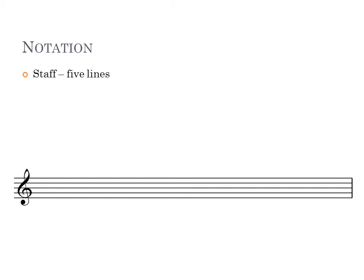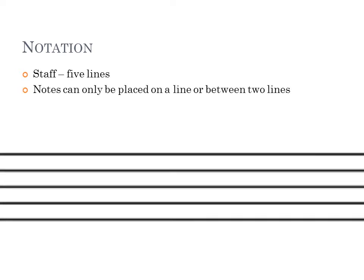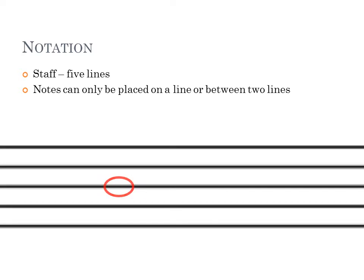The staff has five different lines, and we use those five lines to place notes on. We can only place them on a line or in between two lines — not kind of on a line or right outside the whole staff. We need to put them either in the middle of a line or right in the middle between two lines. Those are the only two places where we can put a note.